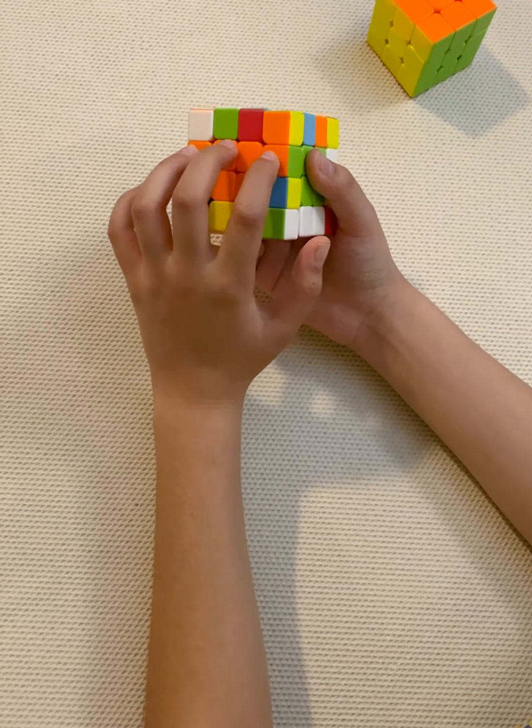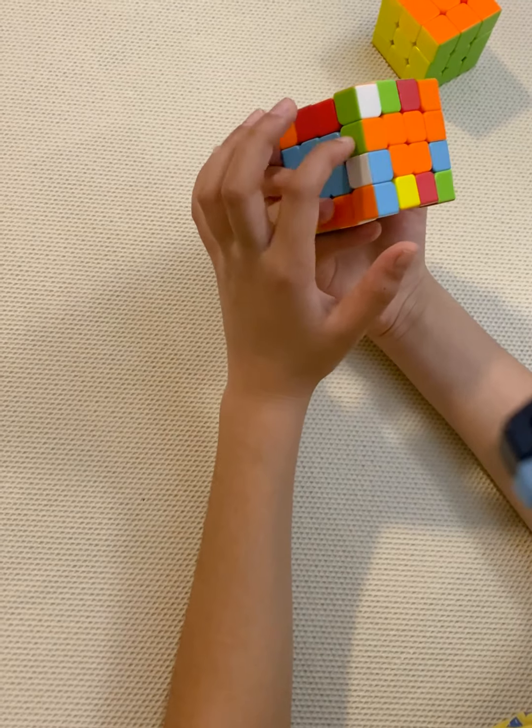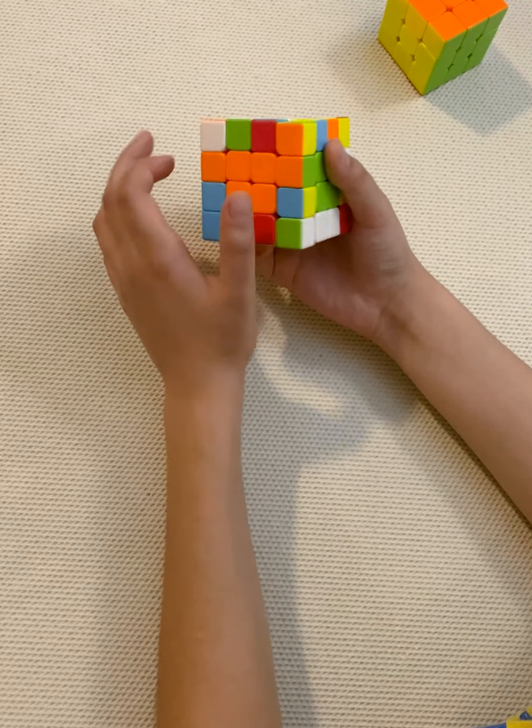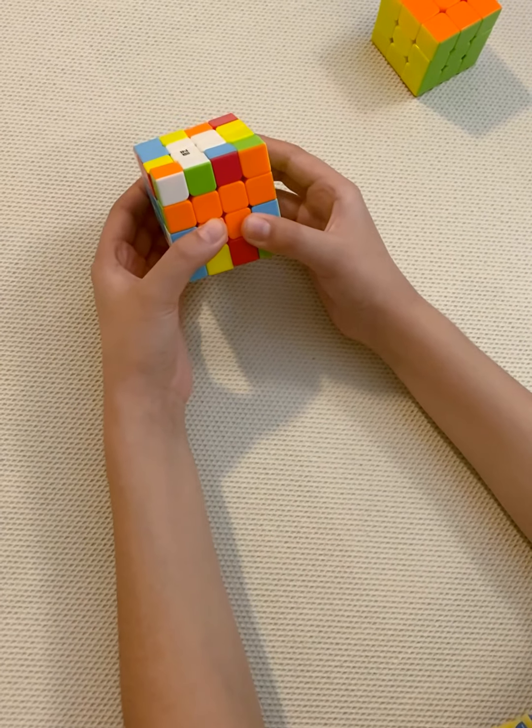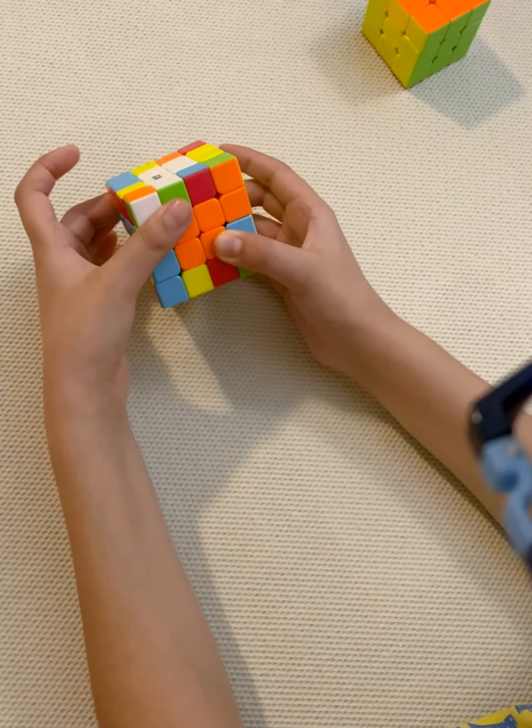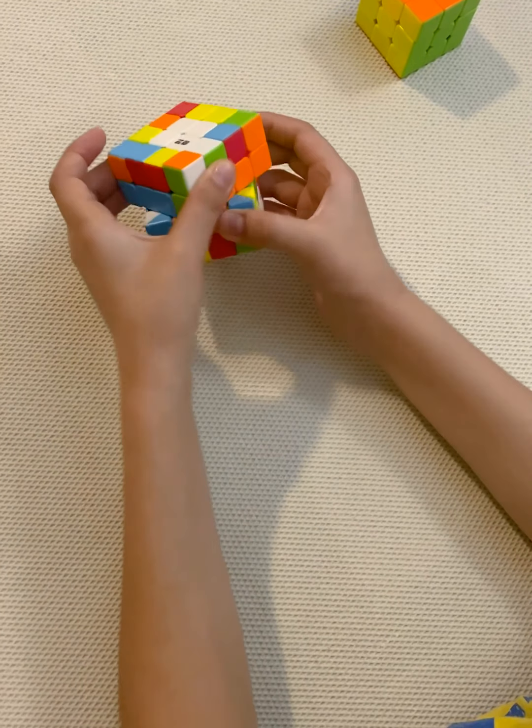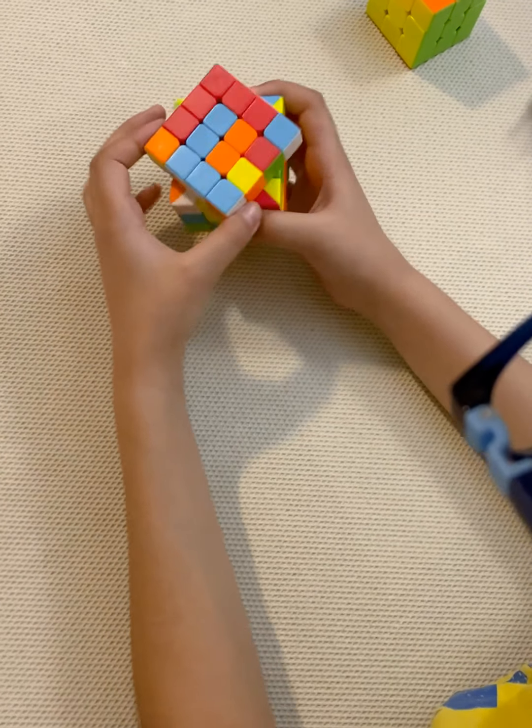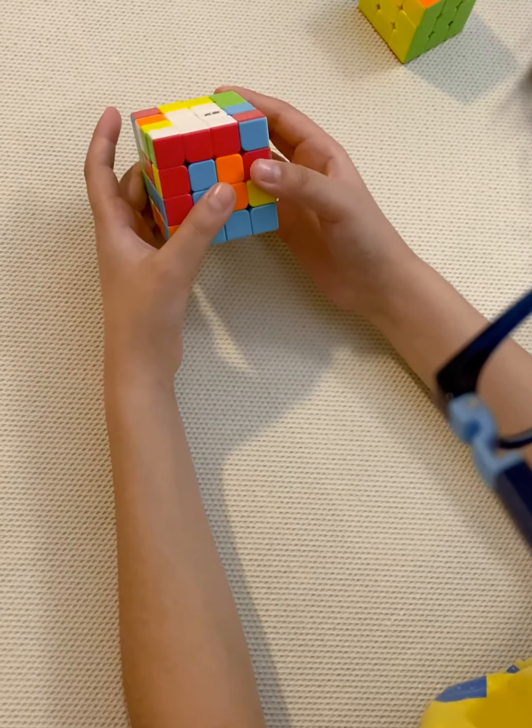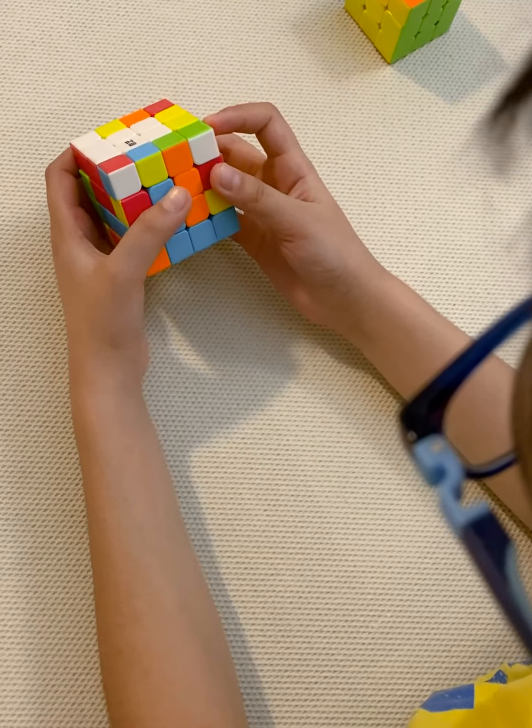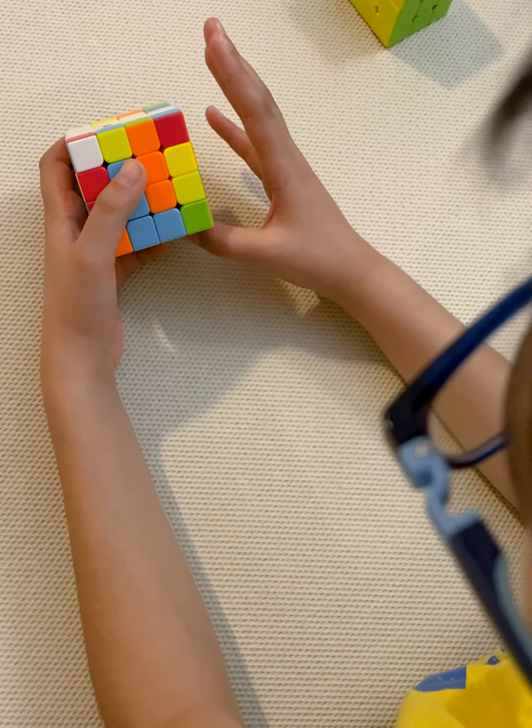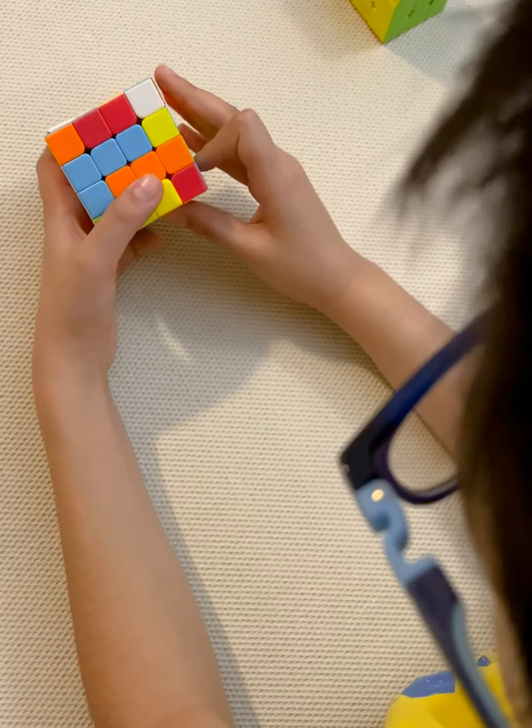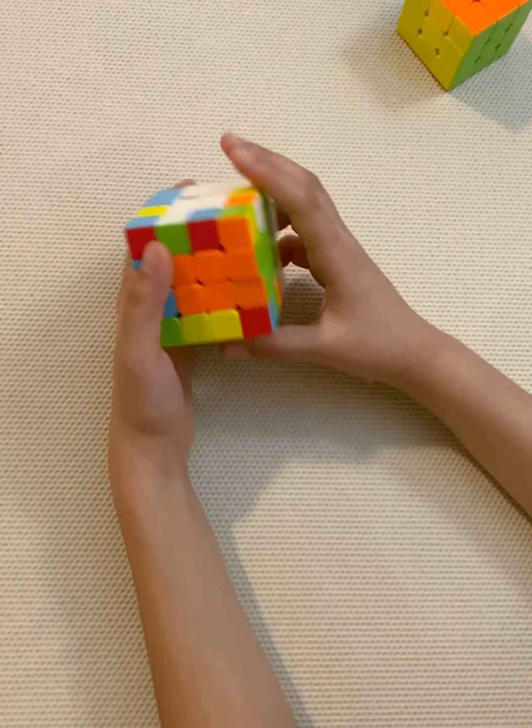Orange and green on one side and orange and green on the other side. Then perform the same exact algorithm: top two to the right, right up, front counterclockwise, top to the left, right back down, front clockwise. You see that we've solved the edge.